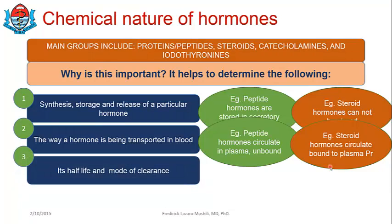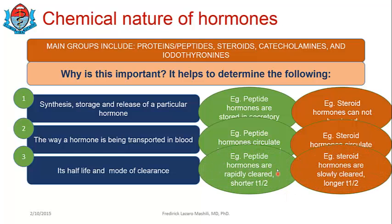Number three, you can tell the half-lives and the mode of clearance of hormones when you know their chemical nature. Peptide hormones — a good example being insulin — are rapidly cleared from the circulation, so they have short half-lives.